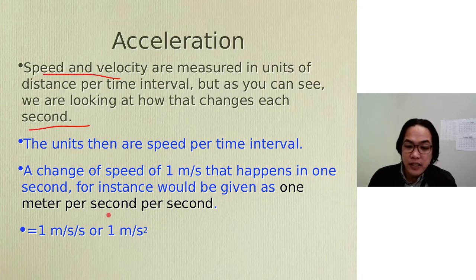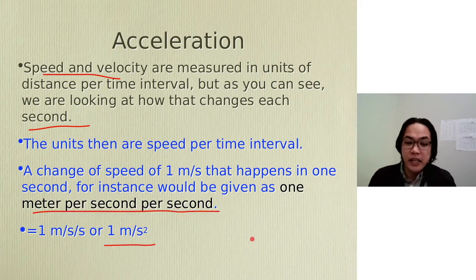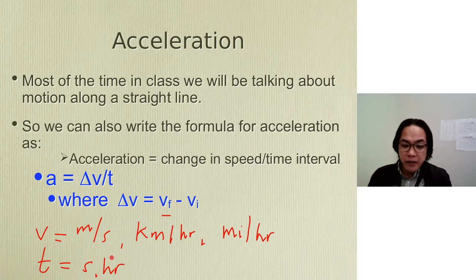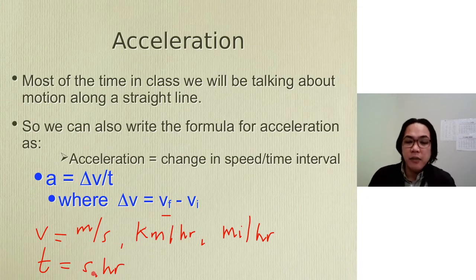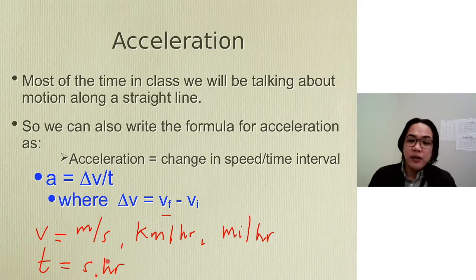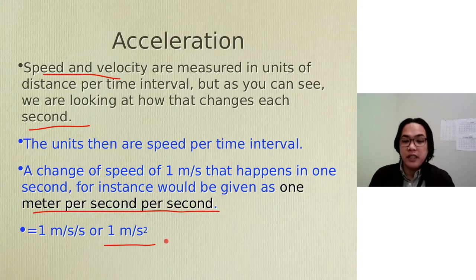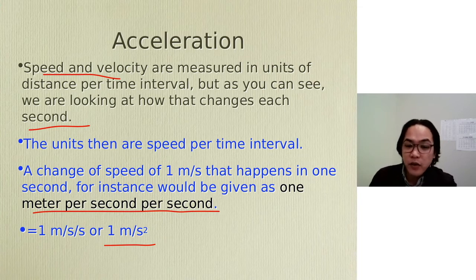The unit we will be using is meters per second per second, or meters per second squared. Here you have meters per second per second — we cannot cancel the seconds because both of them are in the denominator. There's an invisible exponent of 1, so 1 plus 1 equals 2, and that's why we have meters per second squared. Take note of the units because we will be using them, and of course the formula: change in velocity divided by time.